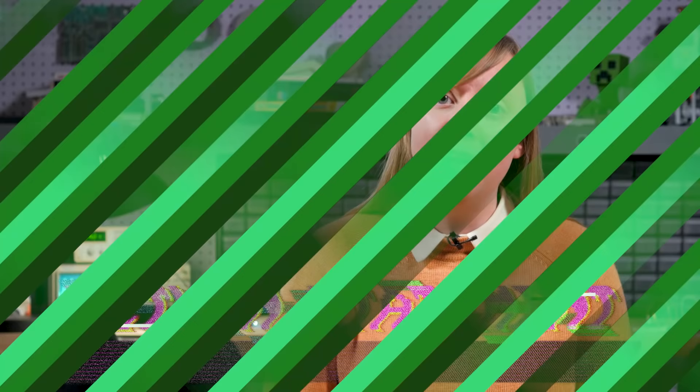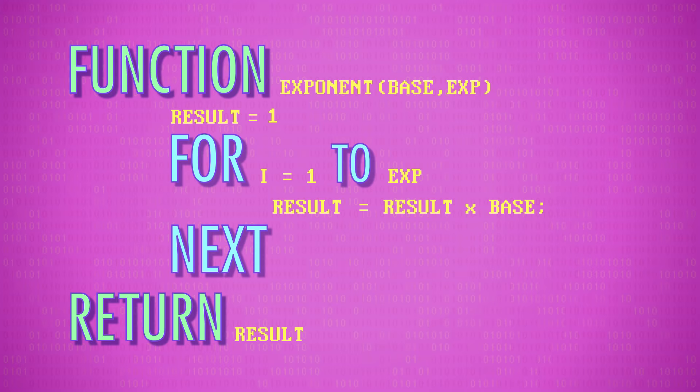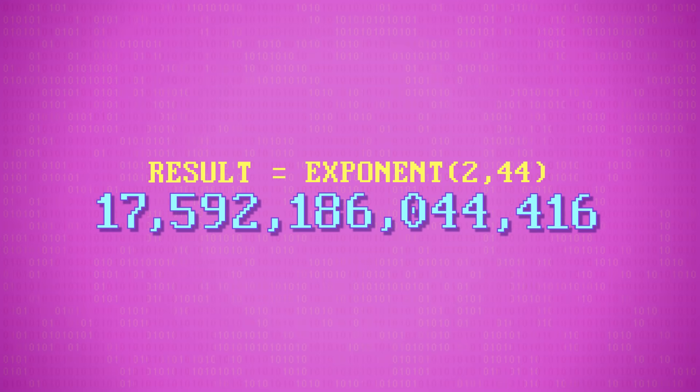So our full function code looks like this. Now we can use this function anywhere in our program, simply by calling its name and passing in two numbers. For example, if we want to calculate 2 to the 44th power, we can just call exponent(2, 44), and about 18 trillion comes back. Behind the scenes, 2 and 44 get saved into variables base and exp inside the function. It does all of its loops as necessary, and then the function returns with the result.